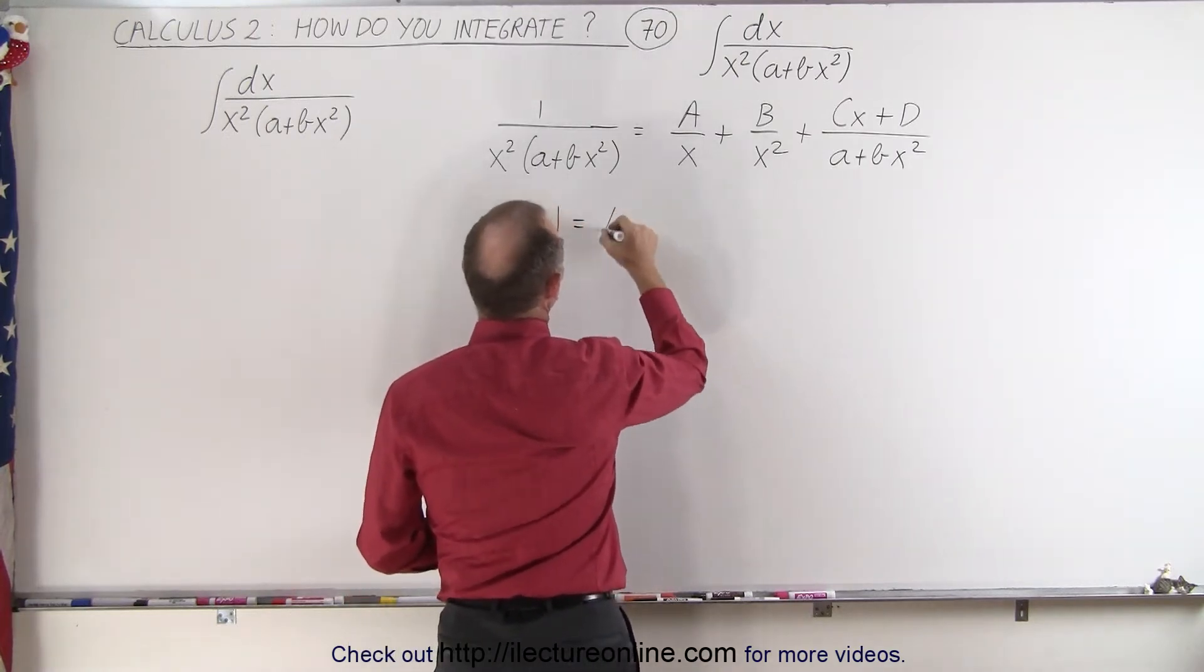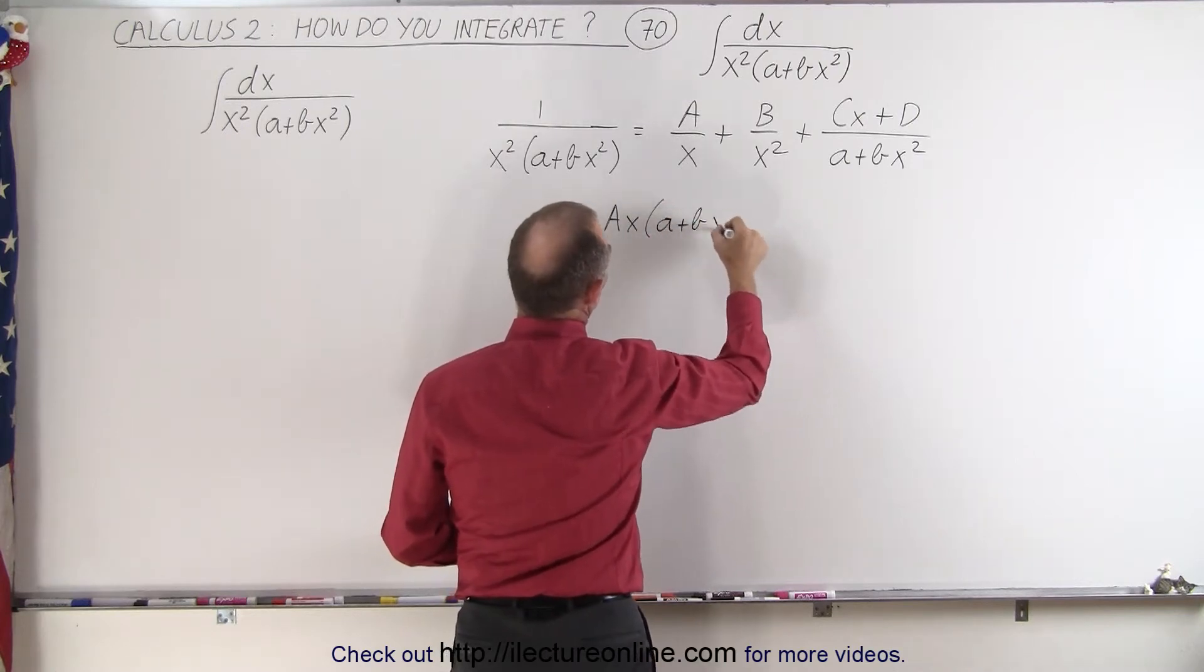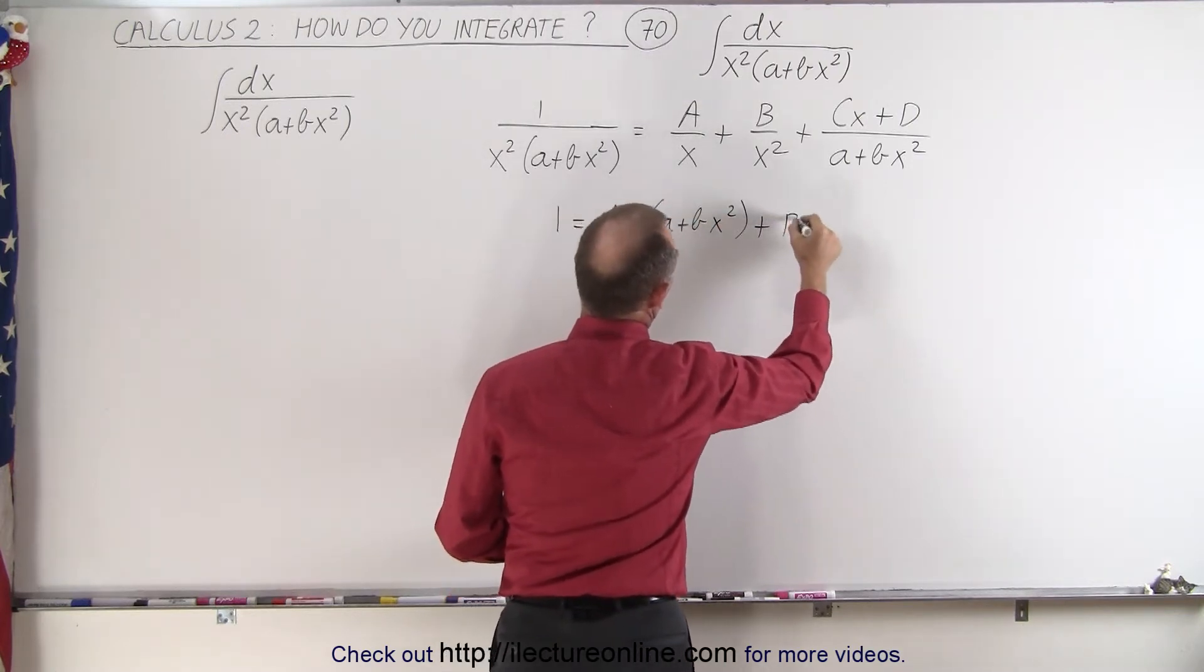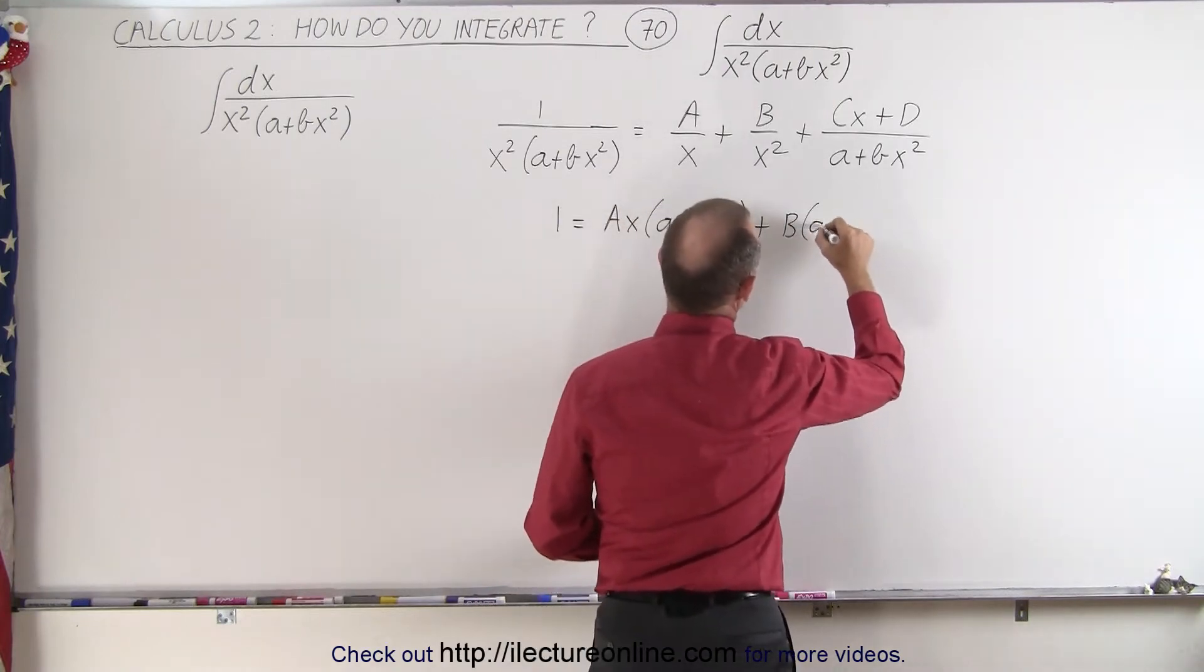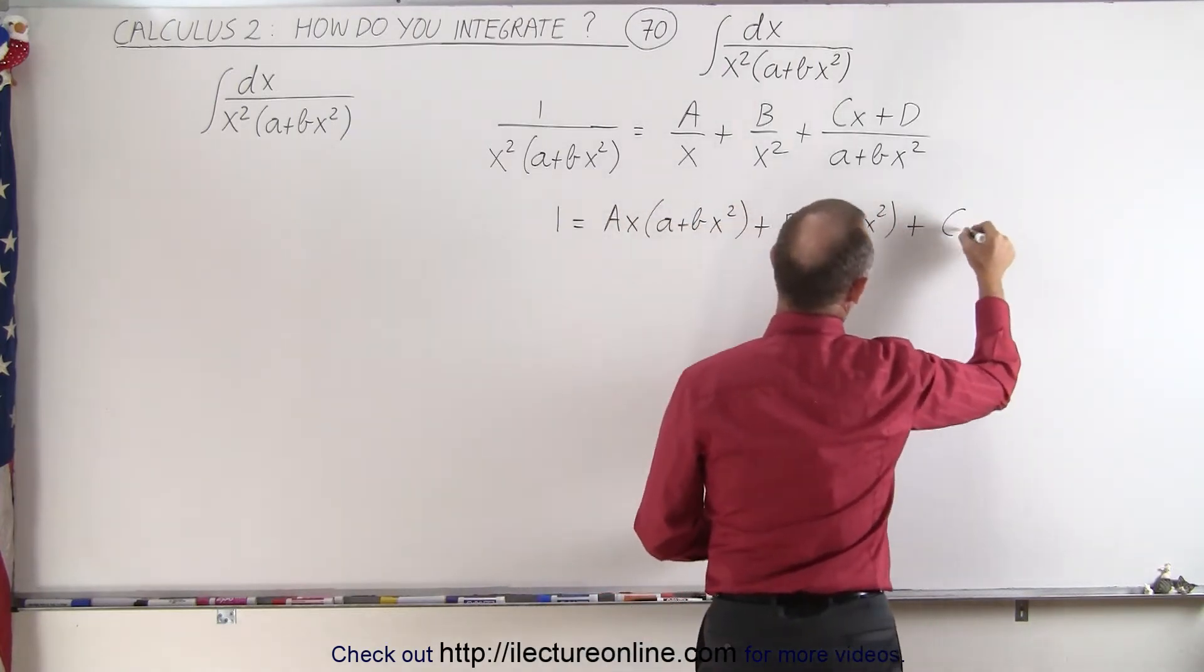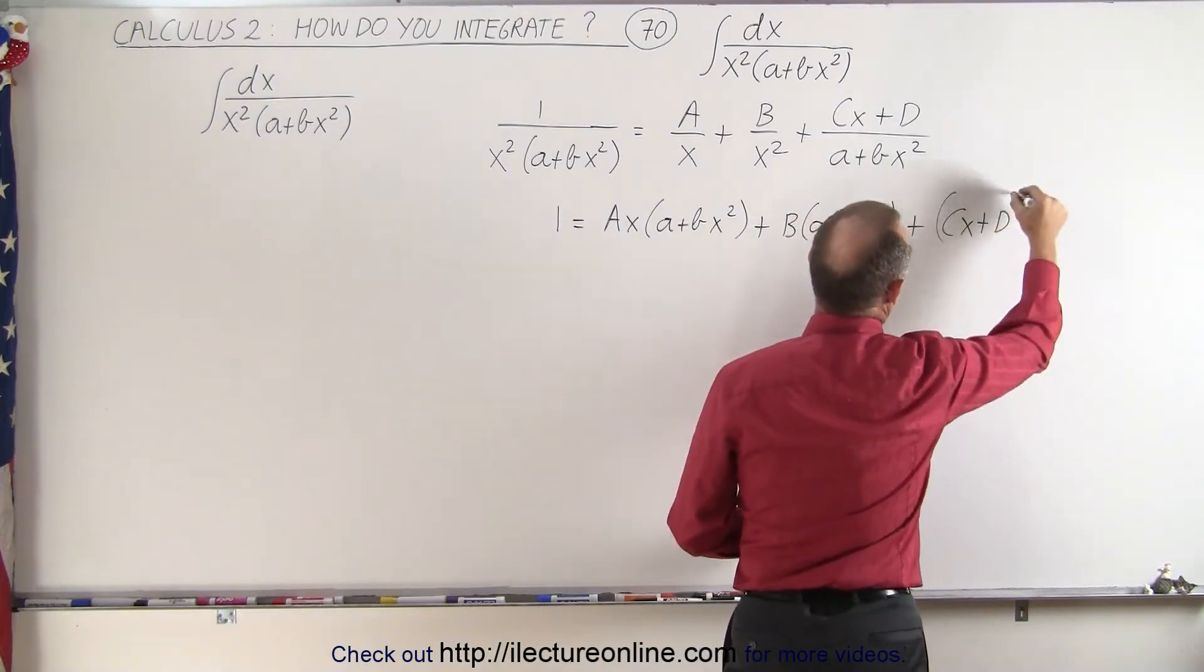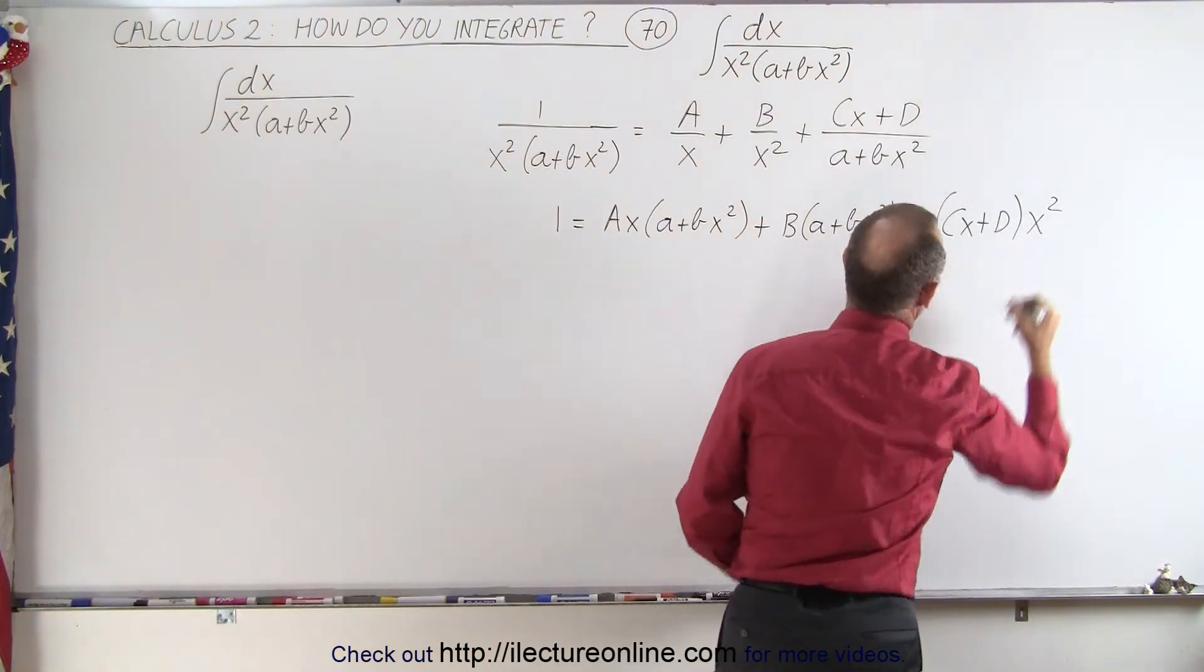So we end up with 1 is equal to Ax times a plus bx squared plus B times a plus bx squared plus Cx plus D times x squared.